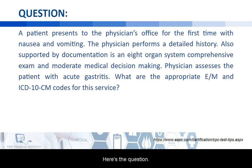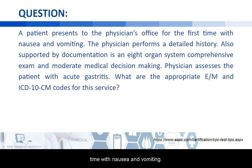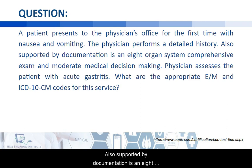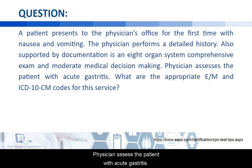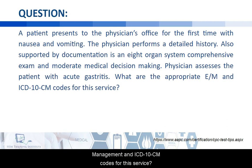Here's the question. A patient presents to the physician's office for the first time with nausea and vomiting. The physician performs a detailed history, also supported by documentation is an eight-organ system comprehensive exam and moderate decision-making. The physician assesses the patient with acute gastritis. What are the appropriate E&M, or evaluation and management, and ICD-10-CM codes for this service?